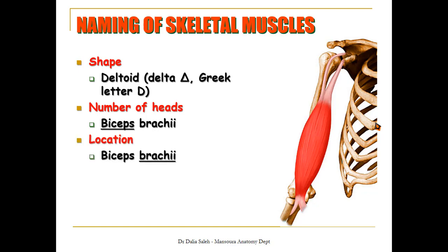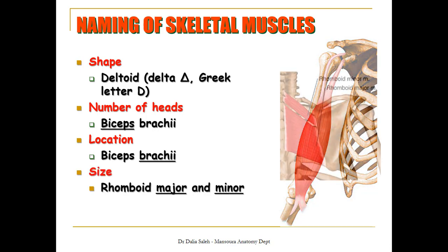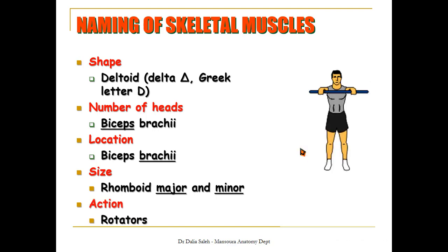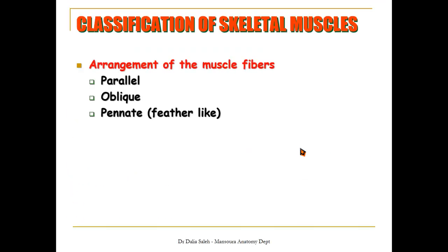Sometimes location is added to distinguish muscles — for example, biceps brachii, where 'brachium' means arm, so this means the two-headed muscle lying in the arm. Muscles can also be named by size, like rhomboidus minor and rhomboidus major — both are rhombus-shaped but one is small and one is large. Muscles can also be named according to their action, like the rotators, which rotate the vertebral column. We can classify skeletal muscles according to the arrangement of muscle fibers into parallel, oblique, or pinnate.